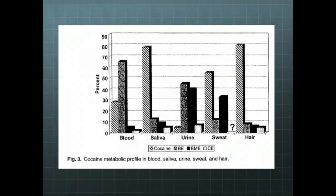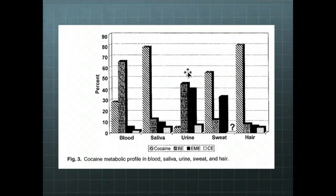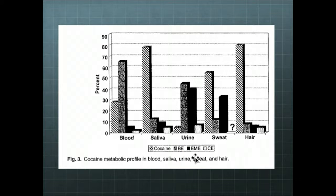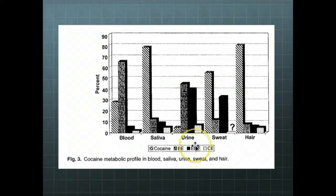This figure shows the distribution of cocaine and cocaine metabolites in blood, saliva, urine, sweat, and hair. A test in the urine should target, as you can see here, benzoylecgonine and ecgonine methyl ester. BE is benzoylecgonine and EME is ecgonine methyl ester. CE is cocaethylene, which is an active metabolite of cocaine. In regards to urine, you can see those would be the targets.